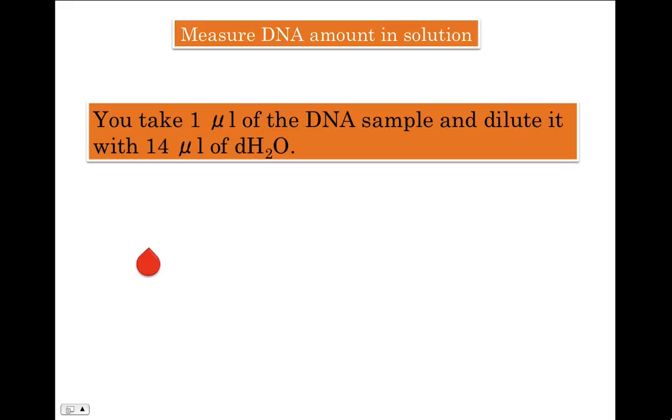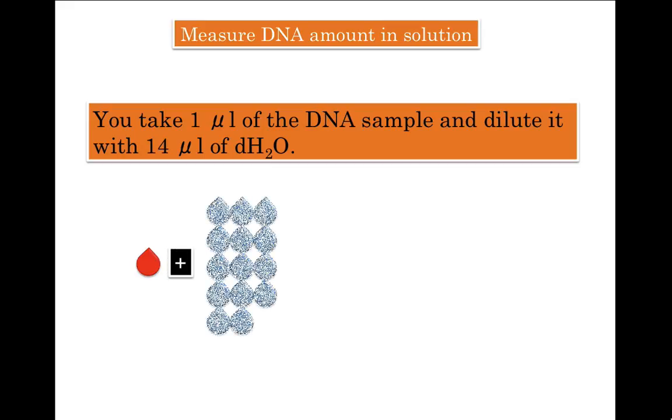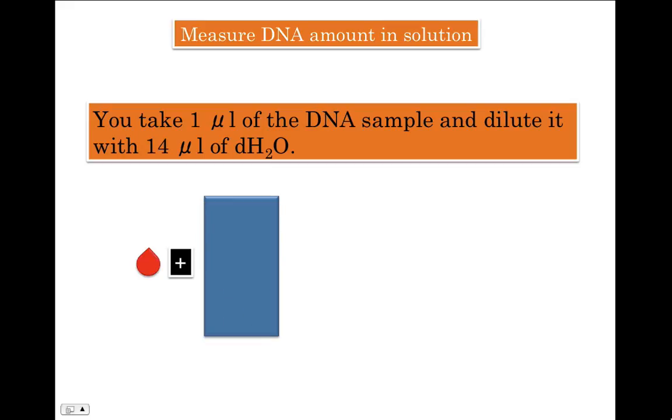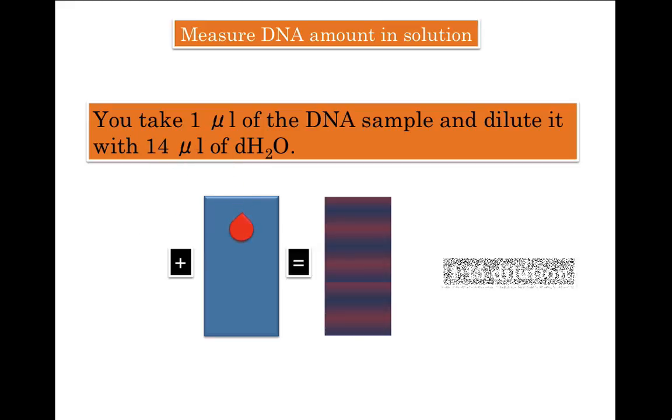Here, you take 1 microliter of DNA sample and add it to 14 microliters of water which gives you a diluted solution. Basically, you took 1 microliter of DNA sample and made it into 15 microliters or you did a 1-15 dilution.